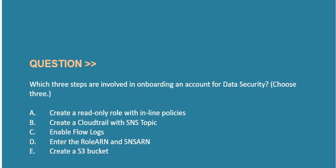Option A: create a read-only role with in-line policies. Option B: create a cloud trail with SNS topic. Option C: enable flow logs. Option D: enter the role ARN and SNS ARN. Option E: create a S3 bucket.